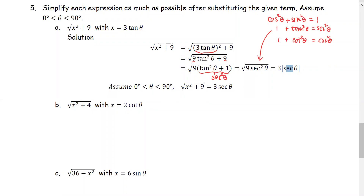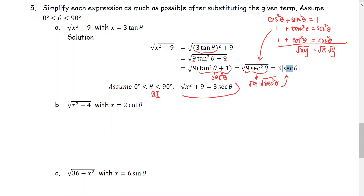Therefore, we have square root of the product of 9 and secant squared theta. With the property in algebra, we know that square root of x times y is the same as square root of x multiplied by square root of y. In this case, we have square root of 9 multiplied by square root of secant squared theta. Therefore, it gives us 3 times the absolute value of secant theta. Since the angle is between 0 and 90 degrees, theta is located in quadrant 1. Therefore, the expression square root of x squared plus 9 is equivalent to 3 times secant theta.